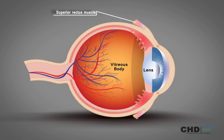The superior rectus muscle is a muscle in the orbit. It is one of the extraocular muscles. The sclera is the white outer wall of the eye. It is a tough, fibrous tissue that extends from the cornea to the optic nerve at the back of the eye.